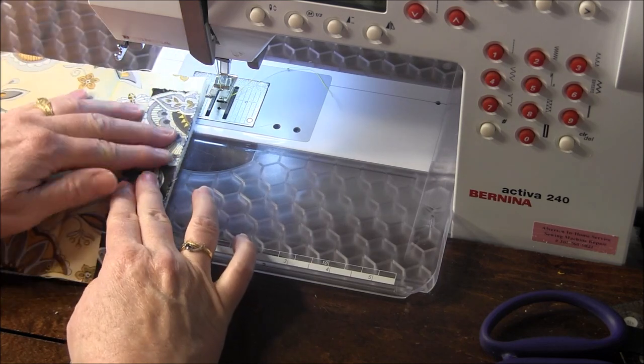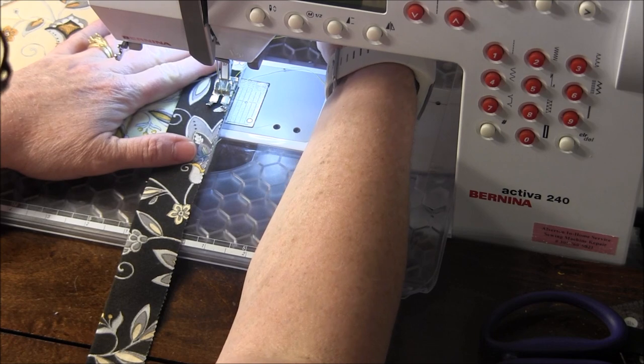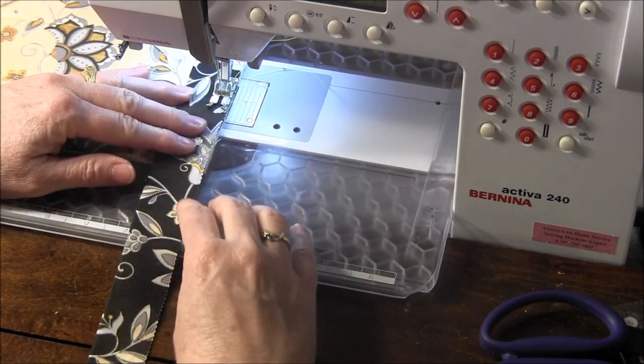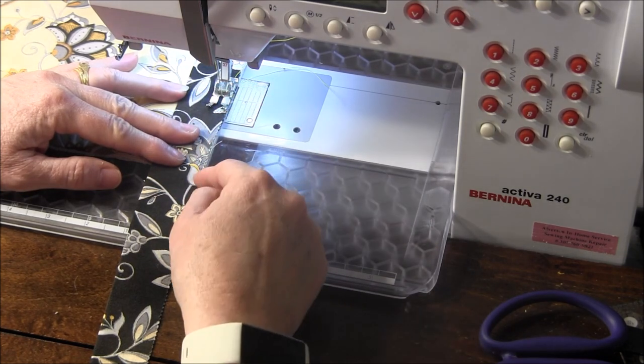And we want to be sewing it onto the back of your mug rug, not on the front, which I was just about ready to do. So put it on there. A quarter inch seam and we're going to sew towards the corner.